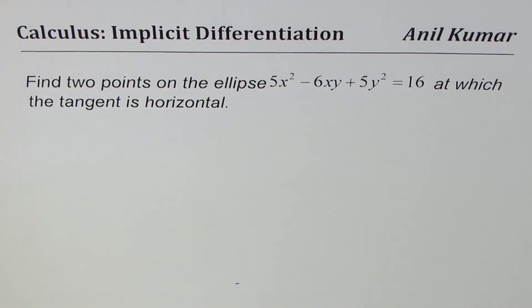I am Anil Kumar sharing with you a test question on implicit differentiation. Find two points on the ellipse 5x² - 6xy + 5y² = 16 at which the tangent is horizontal.